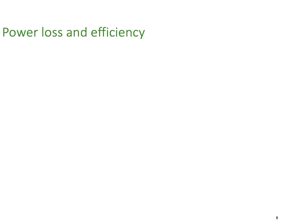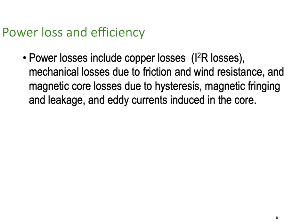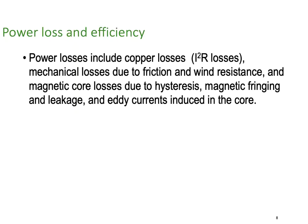Now for power loss and efficiency. Power losses include copper losses, the I²R losses around the machine, mechanical losses due to friction and wind resistance, and magnetic core losses due to hysteresis, magnetic fringing, leakage, and eddy currents in the core. Therefore, the prime mover driving a DC generator has to provide sufficient power to overcome all these losses - it has to put in more energy mechanically than it will get out electrically.